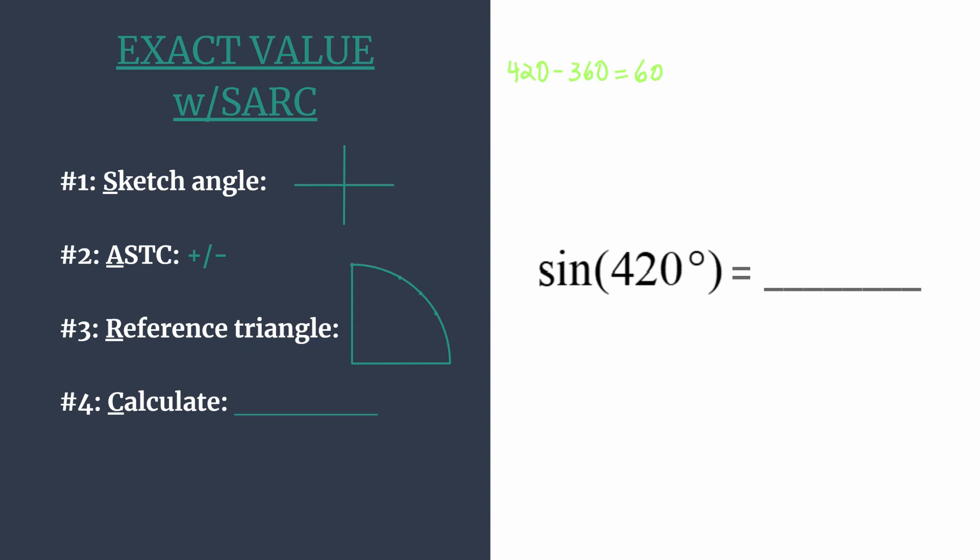So we'll have 420 minus 360, and that gives us 60 degrees, which is coterminal with 420. And it's much easier to sketch 60 degrees. We know that that is going to be in quadrant one about right here. And remember coterminal means they share the same terminal side. So this is the terminal side for 420 as well. We just had to rotate an additional counterclockwise rotation to get there.